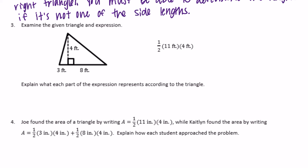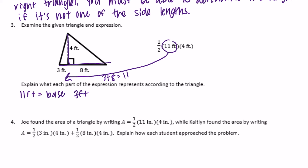Exercise 3: given the triangle and the expression one-half times 11 times 4, explain what each part represents. The 11 feet is the base, which came from 3 plus 8 equals 11. The 4 feet represents the height, and it's the height because it is perpendicular to the base.